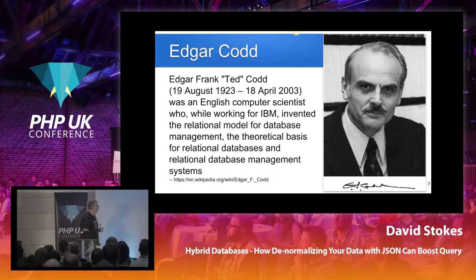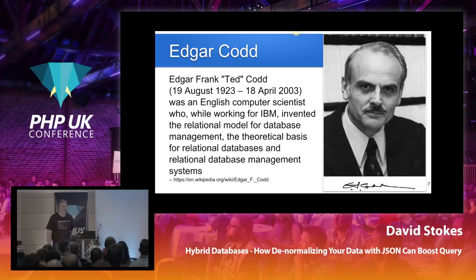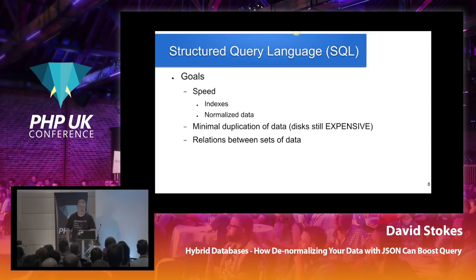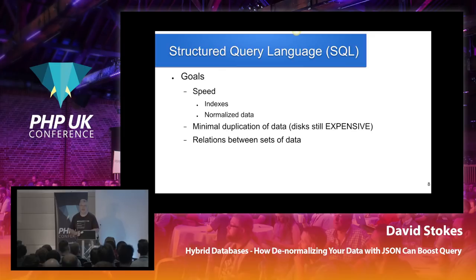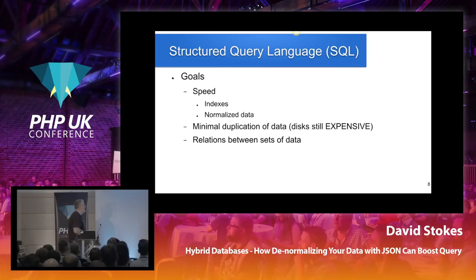Edgar Codd was an IBM researcher who was asked to find a better way to get data — mainly looking at ways not to duplicate stuff because disk drives were so expensive, and to break data into little component bits to make it easier to find information. He came up with something called structured query language. Ironically, IBM had another product they wanted to sell, so they tried to stifle what he was doing. The only reason we have SQL today is because he kept talking to customers. His main goal was the minimum duplication of data.